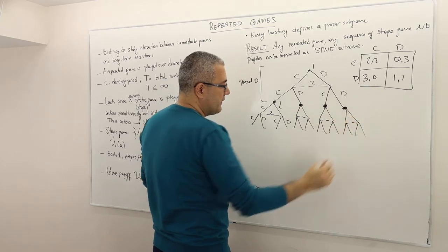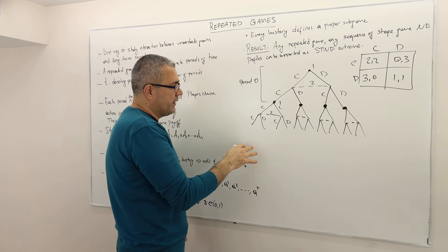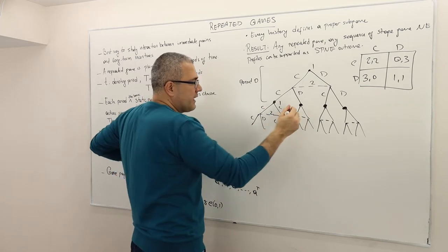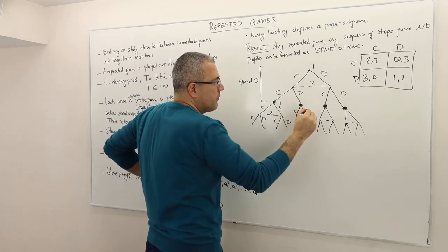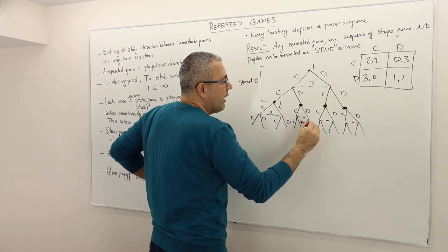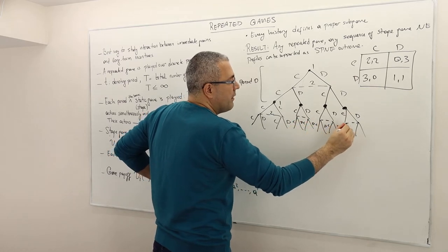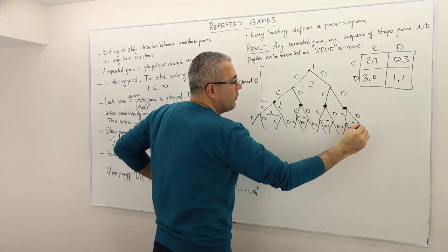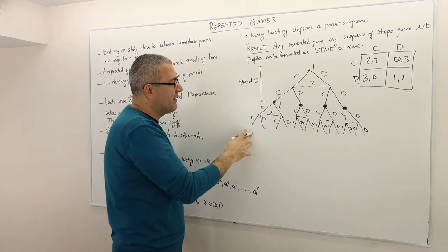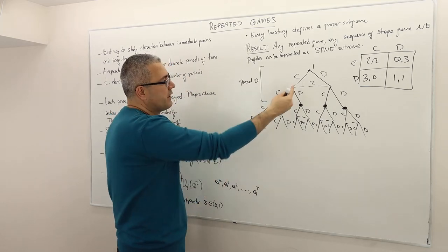As you can see, I cannot really go further than this on the diagram, but we can just for the sake of argument. So here we have all C, D, C, D options. Obviously, if the game is repeated only two periods, that would be it and the realized payoffs follow.